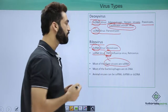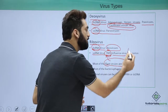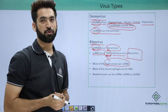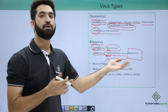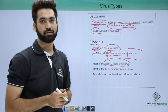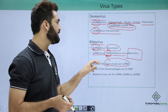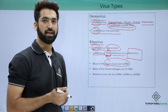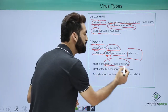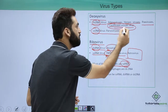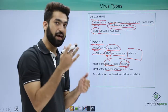In single-stranded RNA viruses, you have TMV, influenza virus, and one another important virus called retrovirus. Retrovirus includes HIV, which causes AIDS. So HIV is basically a single-stranded RNA virus. Plant viruses are single-stranded RNA — cauliflower mosaic virus is the only exception.